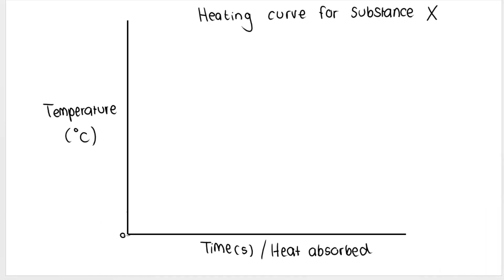We're going to start off with the substance in its solid phase — it doesn't matter what the substance is, we're calling it substance X. We start by measuring the temperature of the solid and we add heat or energy to it, heating that solid up. It starts off as a cold solid and then gets warmer and warmer — a very hot solid. Then, just as with an ice block for example, eventually that solid is going to melt. It will go through a phase change called melting.